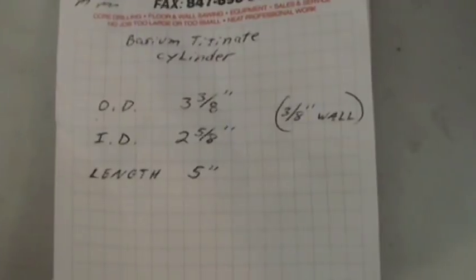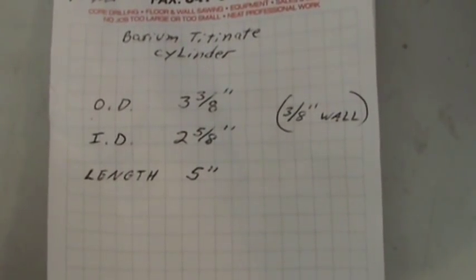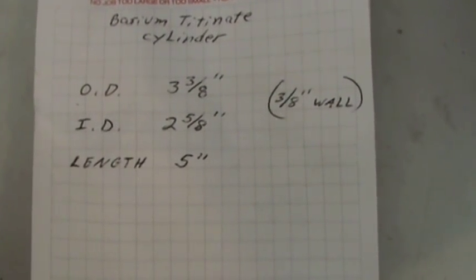There's the measurements: OD, ID, and length, wall thickness.